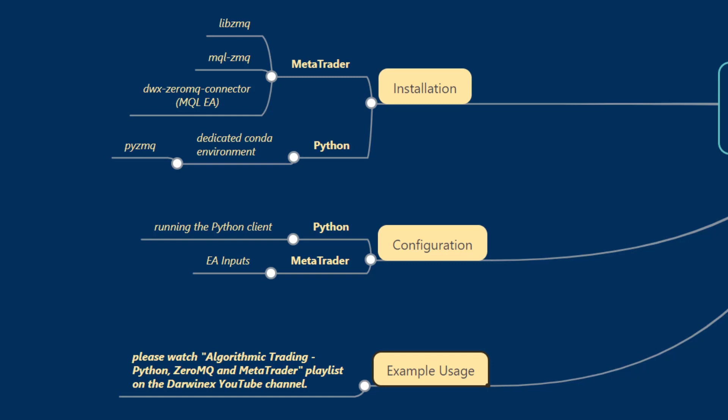In this tutorial, we'll go through the second part of the installation process where we'll configure our external programming environment. For this particular implementation, we'll stay consistent with the Python client provided inside the DWX XRMQ connector project, which is written in Python. So we'll configure a Python environment.